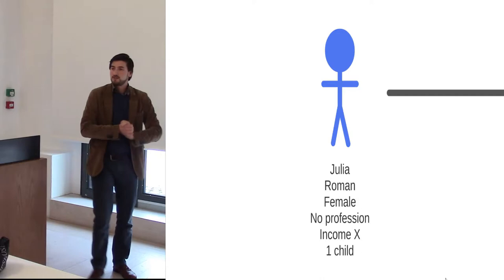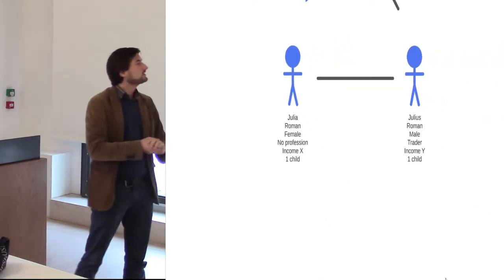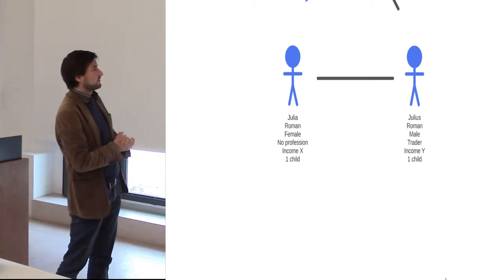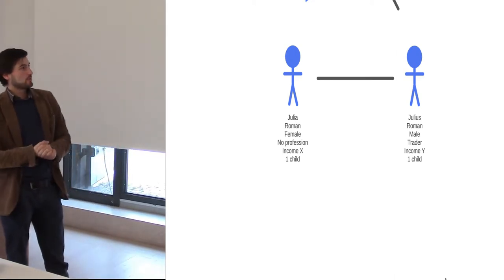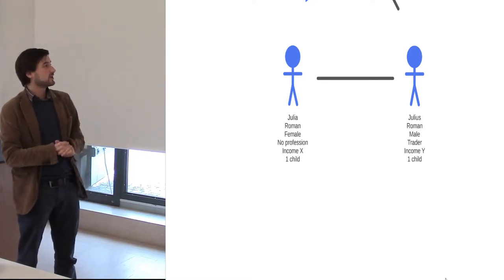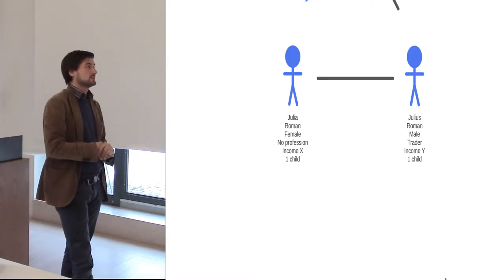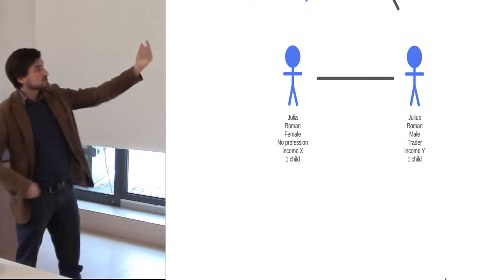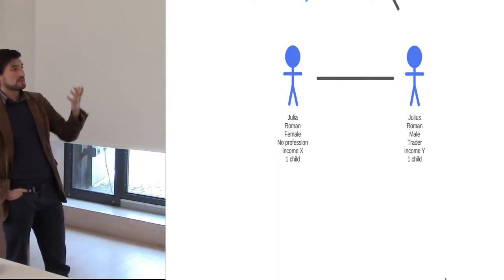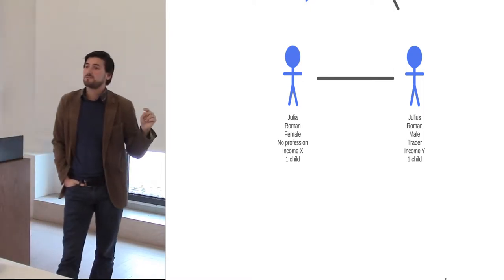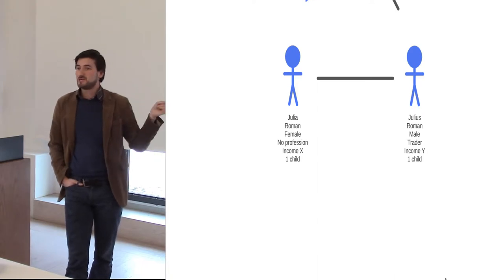A second one is when we introduce a second entity and we have similar information about that entity. So the person is called Julius. He's Roman, he's male, he has a profession and he's a trader and he has a different income than Julia and also one child. Now we see the same kind of dependency here when we just look at the attribute information of Julius. So the income of Julius will be dependent on his profession as a trader but there's a different type of information and dependency we see here.